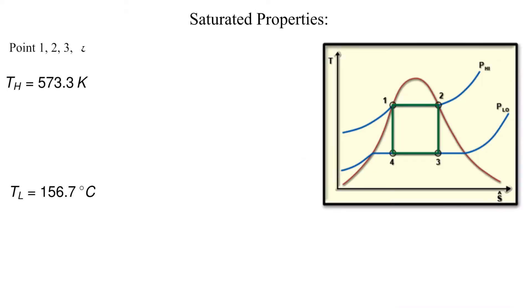Now we need to look up some saturated properties, in particular specific entropy. Point 1 is the saturated liquid point for the isothermal energy addition. Point 2 is the saturated vapor point for the isothermal energy addition. We can look up the corresponding entropies from the steam tables.